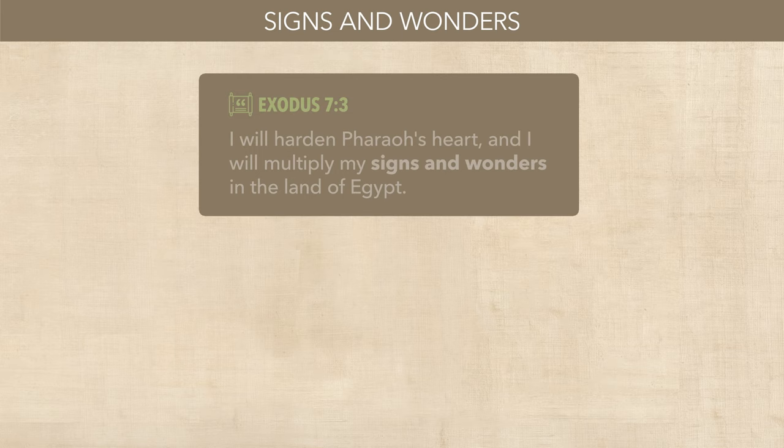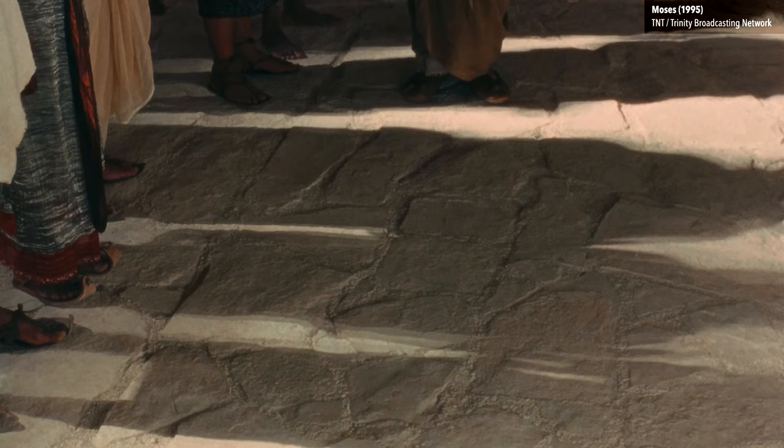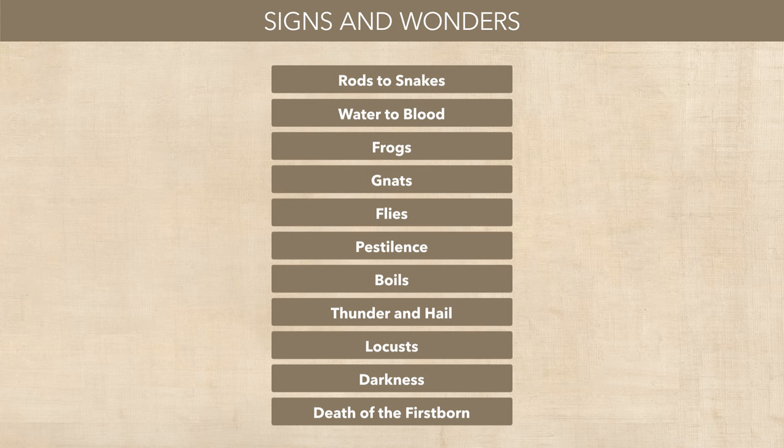When the plagues are first introduced, the text refers to them as signs and wonders, and the word plague only occurs four times in the story. Furthermore, there are actually at least 11 of these plagues and/or wonders, since the story structure treats the miracle with Aaron's staff turning into a serpent as the first wonder. Speaking of structure, most of the plagues follow a fixed formula, but they don't all follow the same formula.